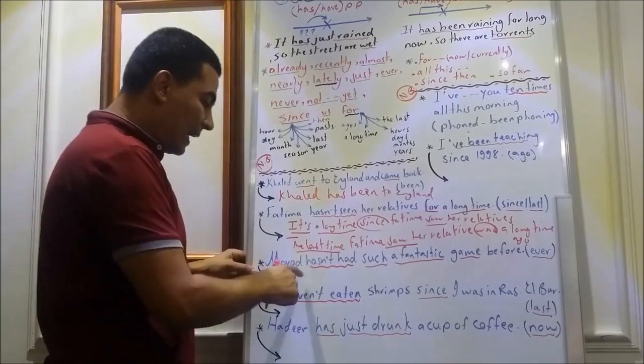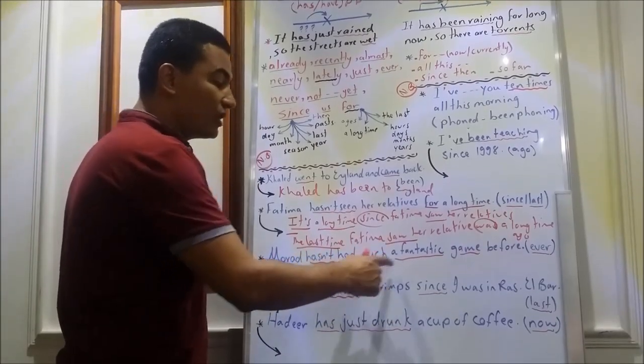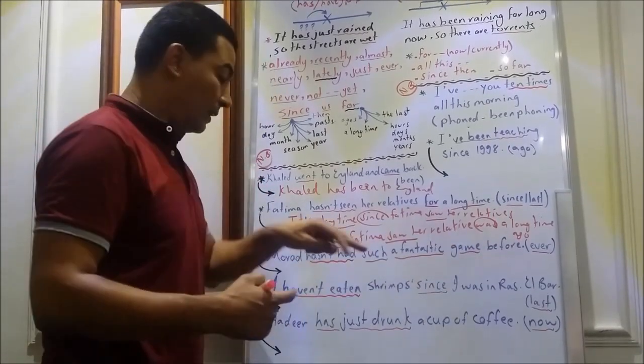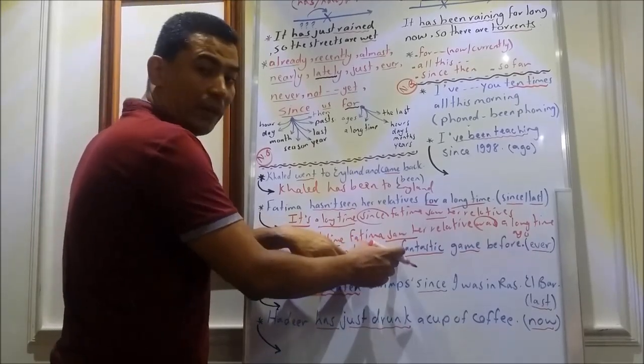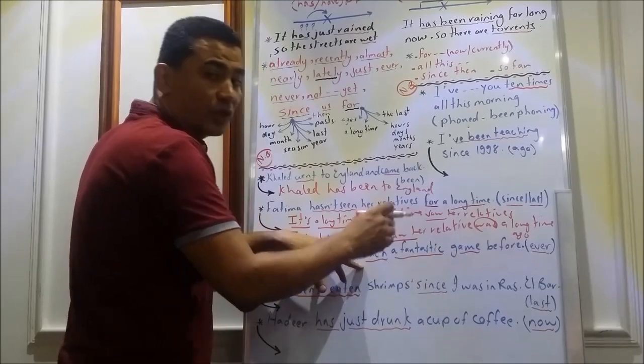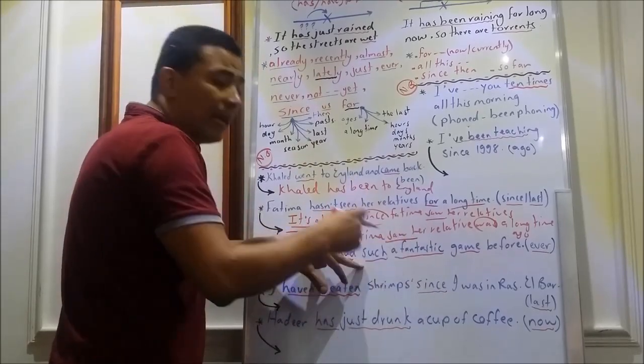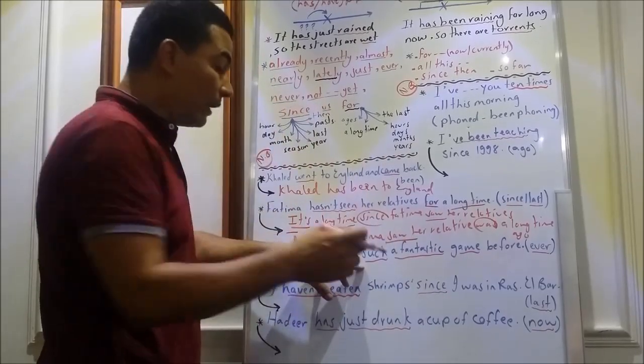The next sentence, Morad hasn't had such a fantastic game before. Here we have present perfect negation, such a or an, plus adjective. If the adjective starts with a consonant, I use a. If the adjective starts with a vowel, I use an. Then game before.